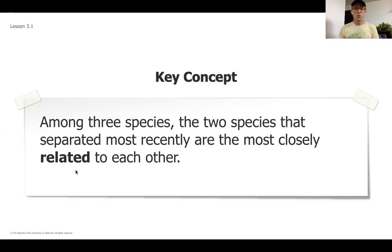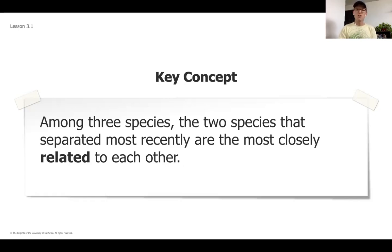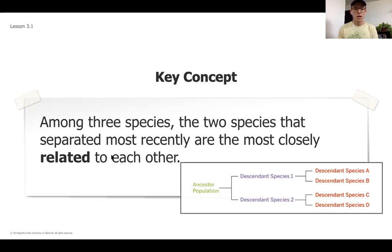You've probably heard about this in talking about different family members — brothers and sisters are more closely related to each other than they might be to their cousins. Our evolutionary trees are pretty similar to what a family tree or a pedigree chart might look like. Among three species, the two that most recently separated are most closely related.